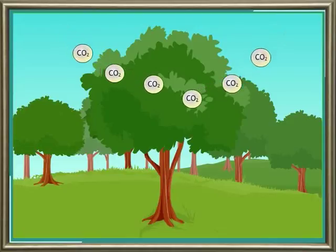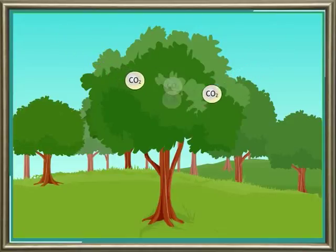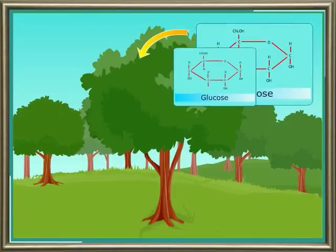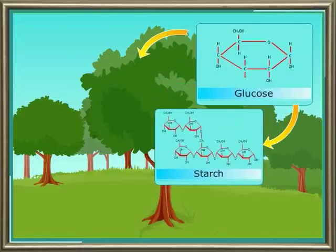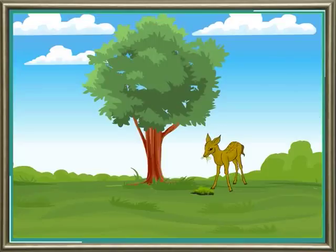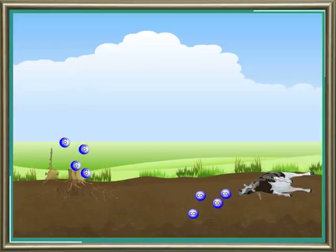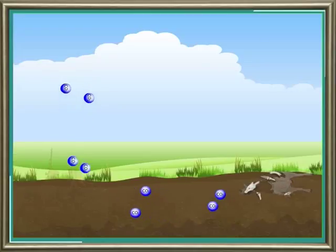Plants utilize carbon dioxide and use it in photosynthesis to produce glucose. Some glucose is used by plants and some is converted into starch. When animals eat plants, this starch is used by animals and carbon dioxide is released. Decomposition of dead bodies of animals and plants also releases carbon dioxide.